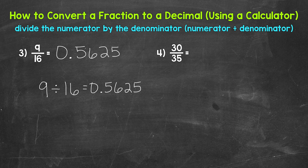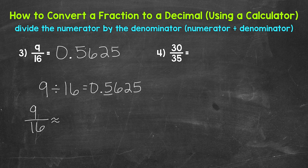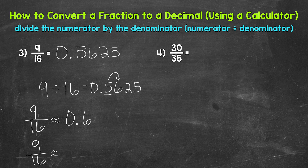Another possibility is to round to make it shorter. If we get long decimals or even repeating decimals, we can round. Rounding to the tenths place: nine sixteenths is approximately 0.6, since we have a five in the tenths with a six to the right in the hundredths, so we round up. Rounding to the hundredths: we have a six in the hundredths with a two in the thousandths, so this rounds to 0.56 — nine sixteenths is approximately 56 hundredths.